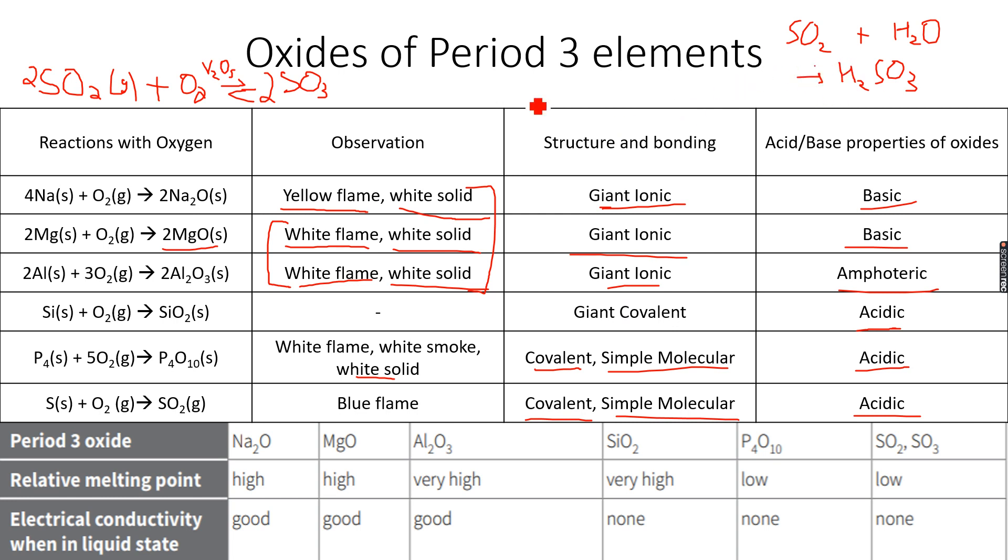Sulfur dioxide is an acidic oxide. When we react SO3 with water, which is sulfur trioxide, we get H2SO4, which is sulfuric acid. So when you react SO2 with water you get sulfurous acid, when you react SO3 with water you get sulfuric acid.